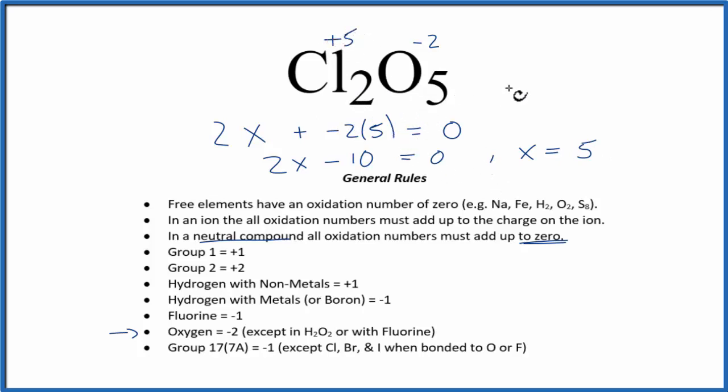If we were to add up all the oxidation numbers for each element, we could take two times plus five, that's plus ten. Five times minus two, that's minus ten. Plus ten and minus ten, that'll give us zero.